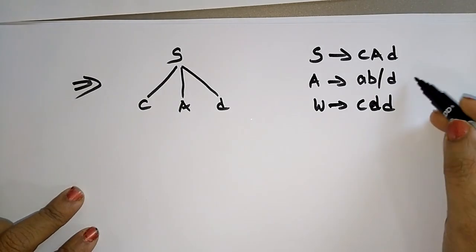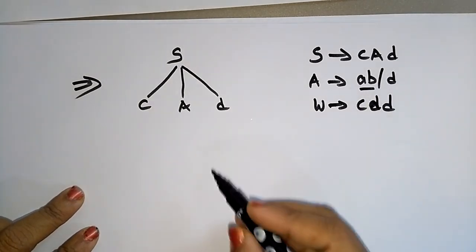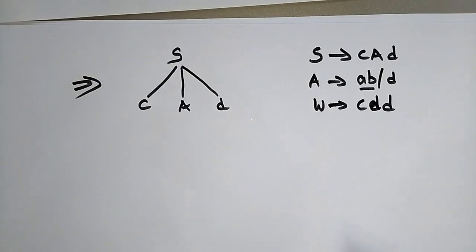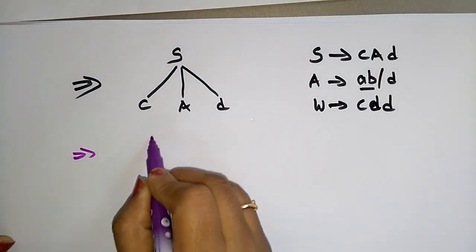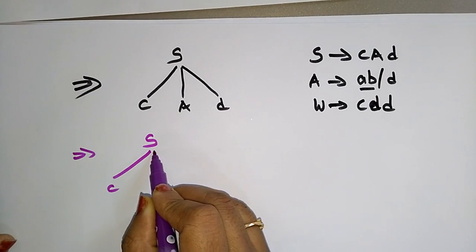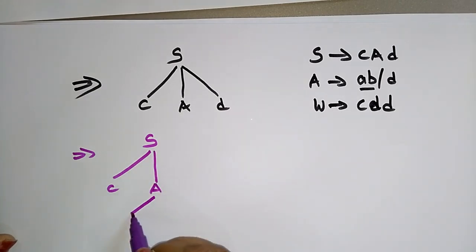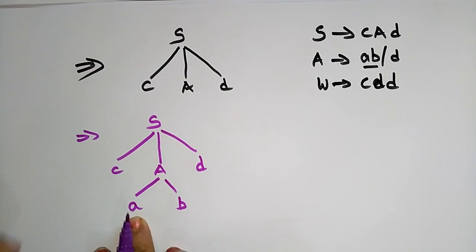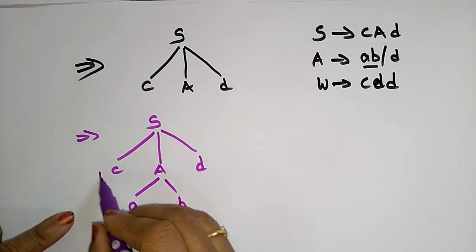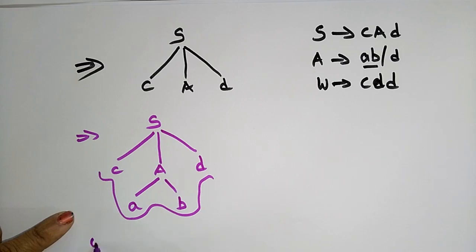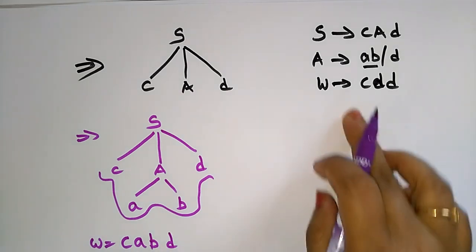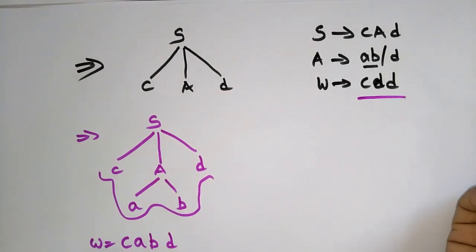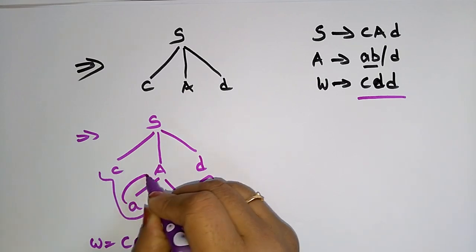In place of A, first substitute ab. So the tree now gives the string c a b d. Is it matching with the input string w = cad? No, it is not matching. So what do you have to do? You need to backtrack.